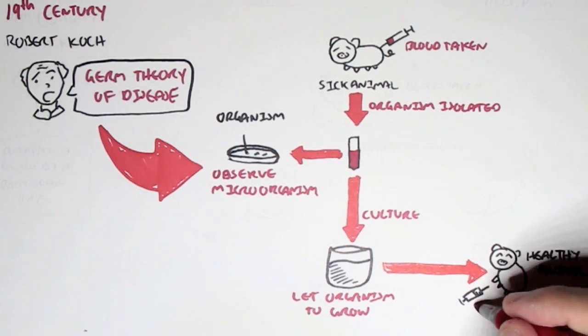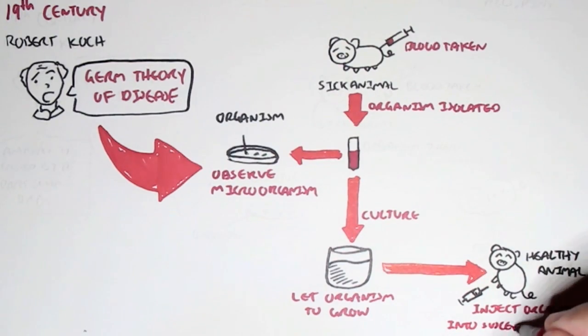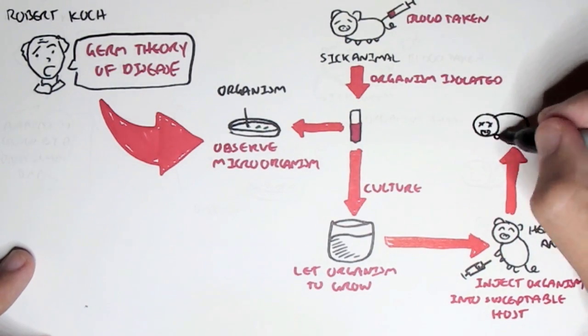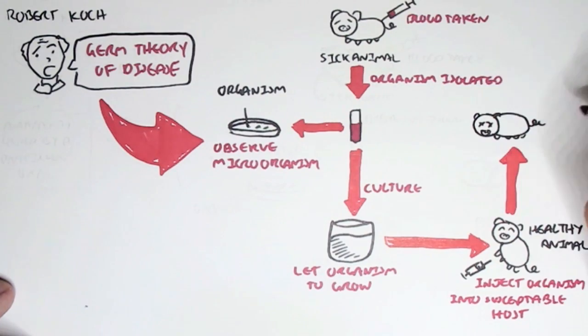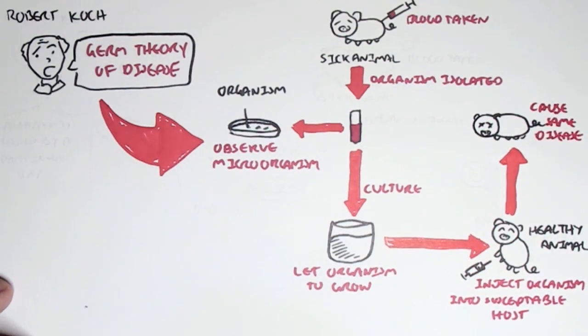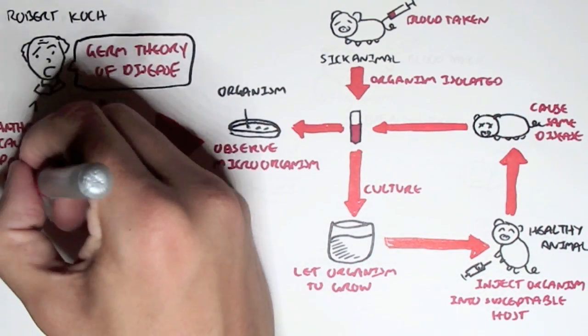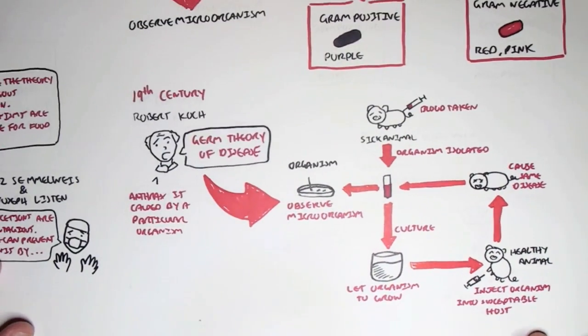After some time, this should cause the same disease as the initial animal. And so if we take blood out of this animal and we isolate it and then we culture it and we observe it under a microscope, we should see the same microorganism. And using this method, Robert Koch was able to prove that anthrax is caused by a particular organism.